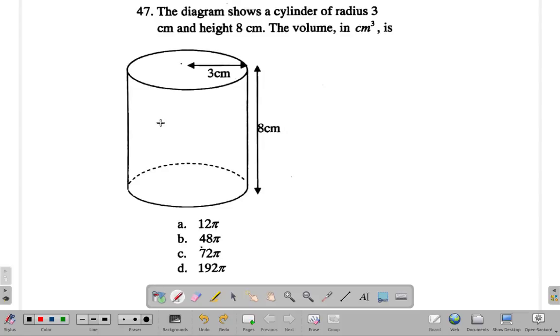You know that the volume of a cylinder is pi r squared, which means the area at the top times h.